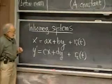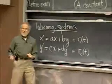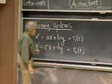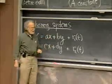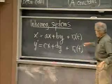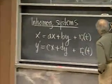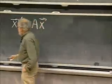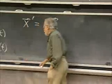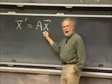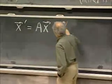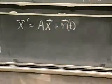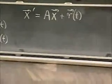When you studied second-order equations, it was homogeneous if the right-hand side was zero, and inhomogeneous if there was something else there. In matrix form, the left-hand side is x prime, the homogeneous part is Ax, and the only extra part is r — the column vector of those two functions of t. These are given explicit functions of t, like exponentials, polynomials, the usual stuff on the right-hand side of a differential equation.